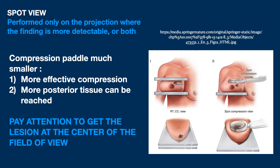Let me move on to the spot view. It is generally performed acquiring two projections of the standard examination — CC and MLO projections — if the finding is effectively visible in both. The dedicated compression paddle is much smaller than the standard one, which means that the compression may be more efficacious and more posterior areas may be reached. You want the lesion in the center of the field of view, and it is not easy to do, especially in very large and very mobile breasts. Also, be aware that very strong compression could push the lesion outside the field, so pay attention to that.